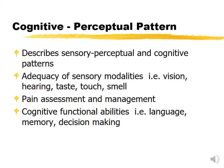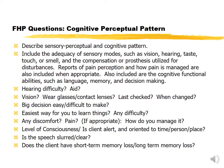The cognitive-perceptual pattern describes the sensory, perceptual, and cognitive patterns of your patient. This includes their ability to see, smell, taste, touch, and hear. It also includes pain assessment and management, and cognition — the patient's ability to produce and understand language, their memory, and their ability to make decisions. You will assess their sensory system: do they have difficulty seeing or hearing, and do they have glasses or a hearing aid?